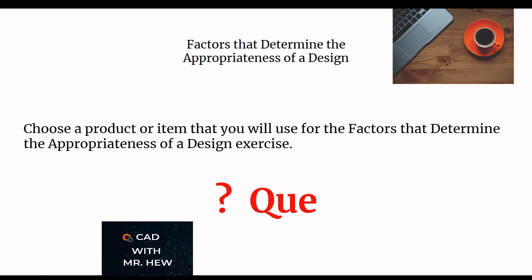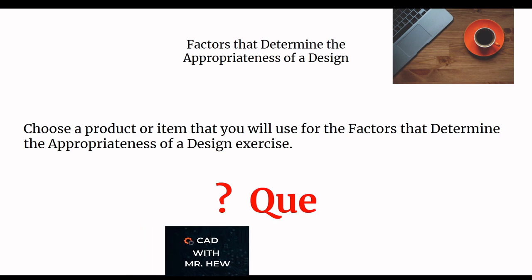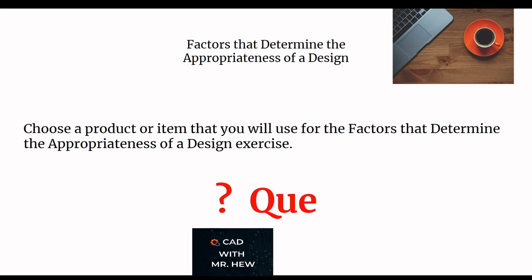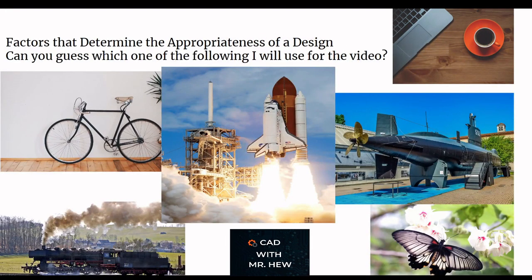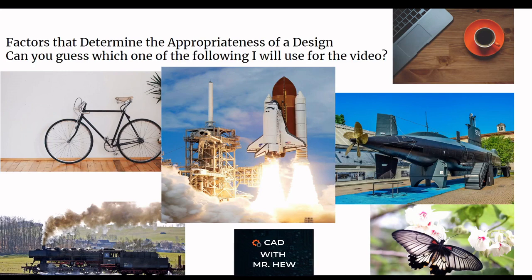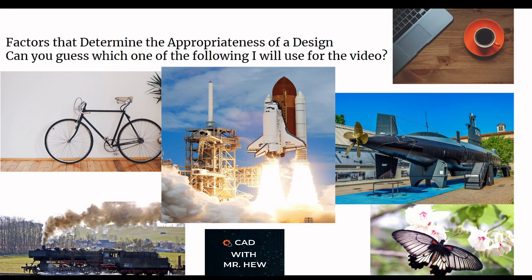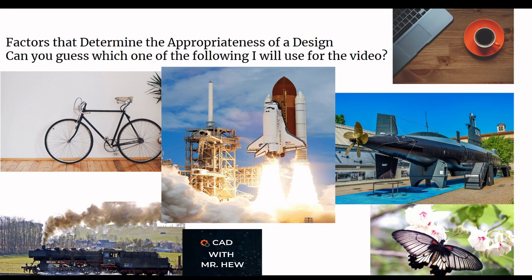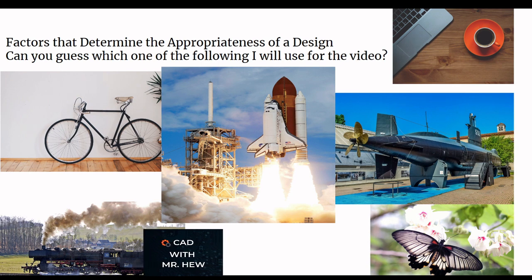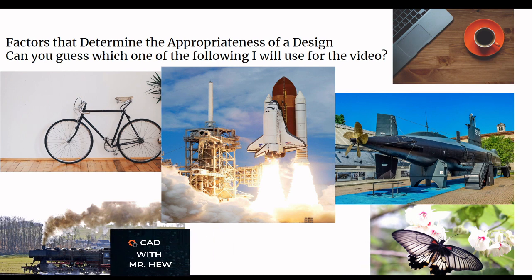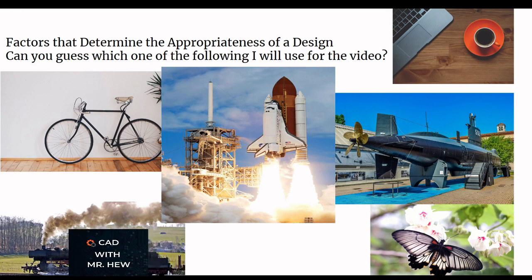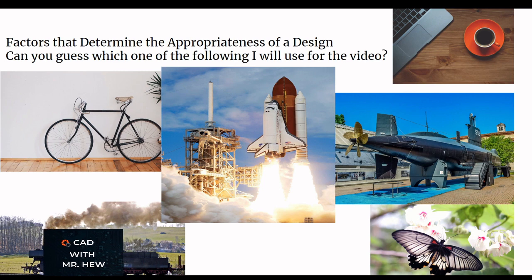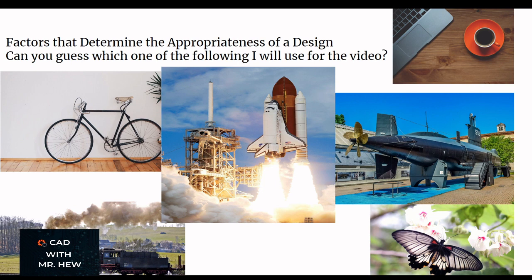I'm going to show you some photographs and I want you to guess which one of them I'm going to use as an example. Can you guess which one of the following items I'll be using in today's video? We have a collage of five photographs: the bicycle, the space rocket or spaceship, the submarine, the locomotive train, and the butterfly.